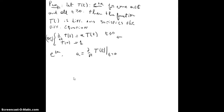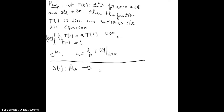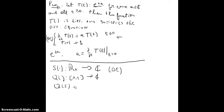Let's prove uniqueness. We have f(t), and suppose S, also going from R to C, is another differentiable function that satisfies the differential equation. We construct a new function q, going from [0, t] to complex numbers, defined as q(s) = f(s)·S(t − s), for s between 0 and t.